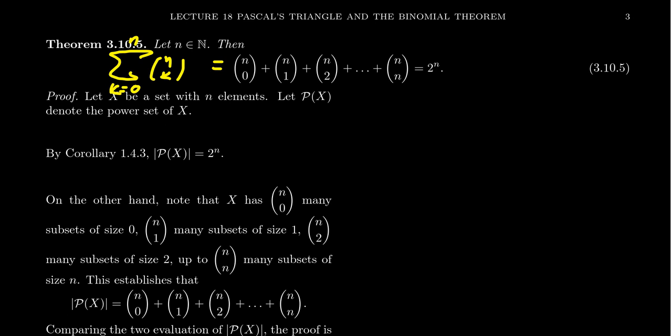When I look at this formula, I want to prove it by combinatorial proof, and the formula actually suggests the proof. The right-hand side is two to the n — I've seen that number before. Two to the n is the cardinality of a power set. So I'm going to count the power set of a set in two different ways. If the set X contains n elements, let P(X) denote the power set of X — the set of all subsets of X, including the empty set and X itself. We proved previously in corollary 1.4.3 that if X has cardinality n, the cardinality of the power set is 2^n.